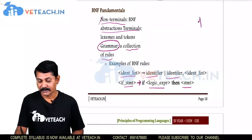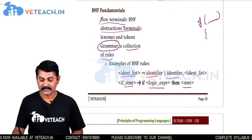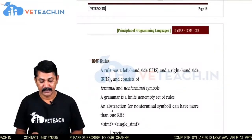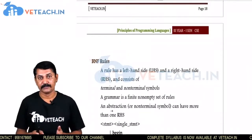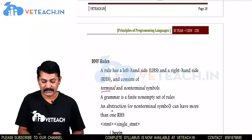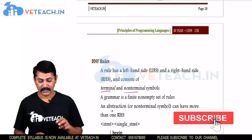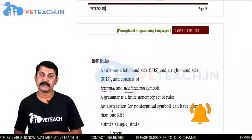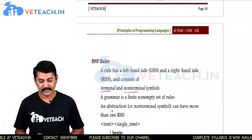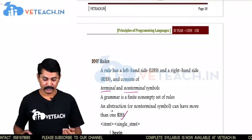Generally, if the condition is satisfied then the statement is executed. A BNF rule has a left-hand side and a right-hand side, each containing terminals and non-terminal symbols. A grammar is a finite non-empty set of rules — meaning rules must be defined, because without rules there is no grammar, which is why it is called a non-empty set. An abstraction or non-terminal symbol can have more than one right-hand side, meaning multiple RHS statements are possible.